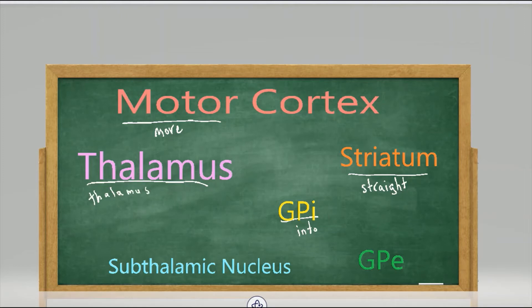So the pathway is from the motor cortex, to the striatum, to the globus pallidus internus, to the thalamus. So it 'moves straight into thalamus.'